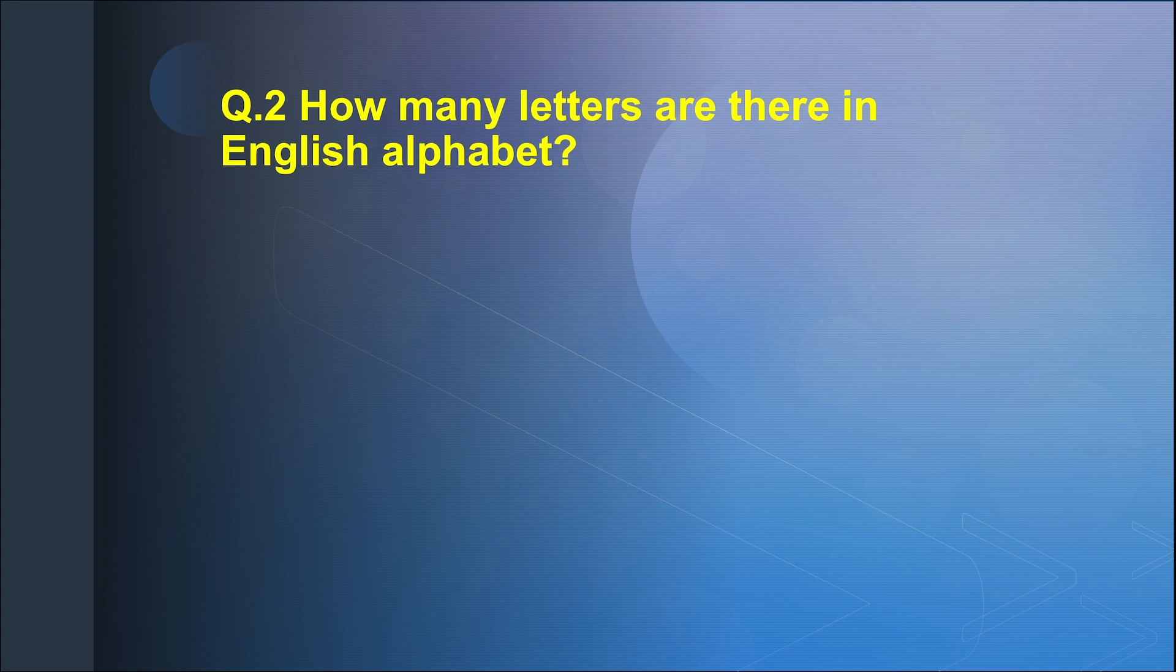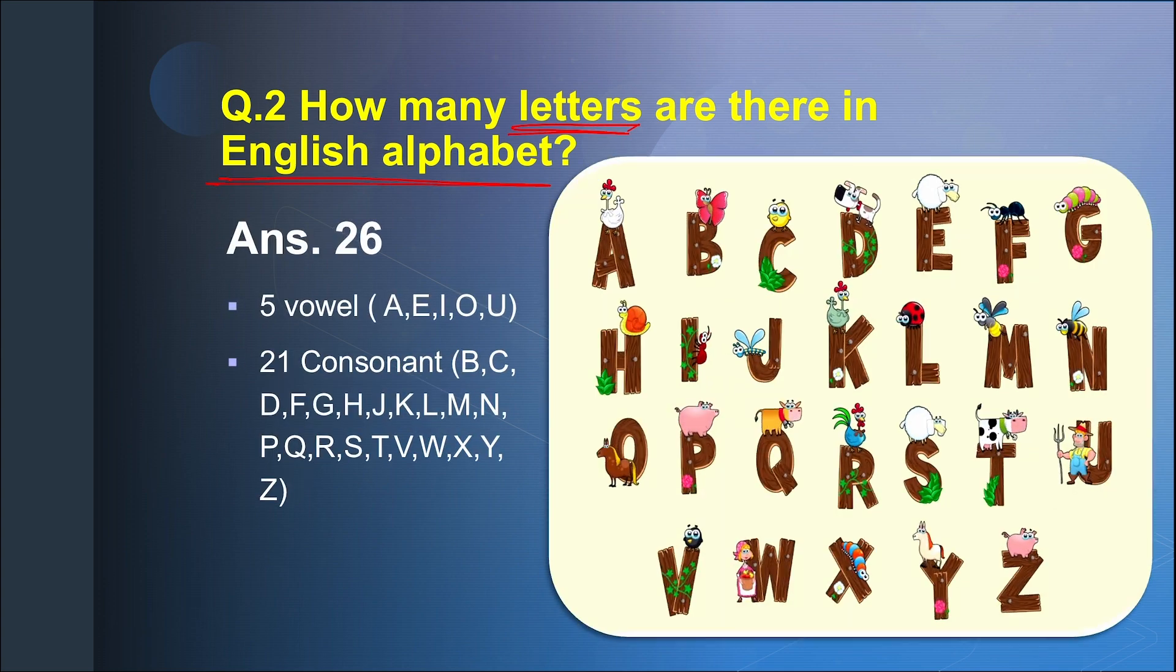Question 2. How many letters are there in English alphabet? Answer: 26. There are 5 vowels which are A, E, I, O, U and there are 21 consonants: B, C, D, F, G, J, K, L, M, N, P, Q, R, S, T, V, W, X, Y, Z.